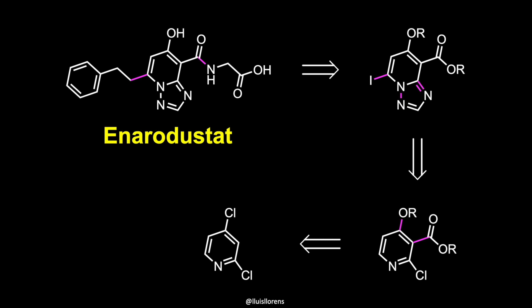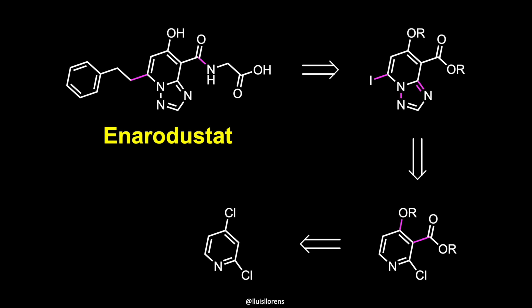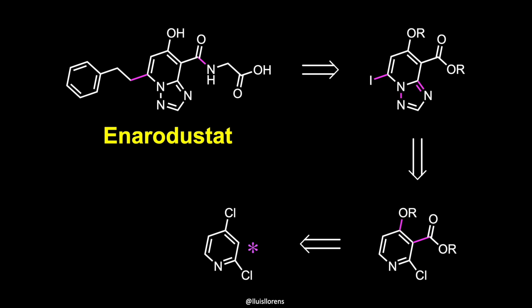A large-scale synthesis of the drug was reported by Japan Tobacco. The key steps for the synthesis of this molecule involved an amide coupling with glycine and a carbon-carbon bond formation. Formation of the triazole ring and regioselective halogenation was accomplished through an intermediate that could be easily prepared from commercial 2,4-dichloropyridine.